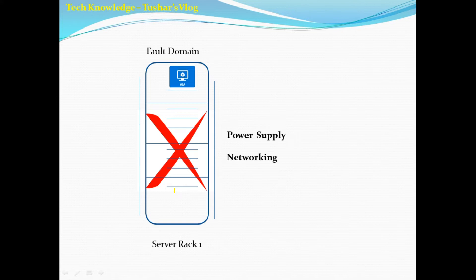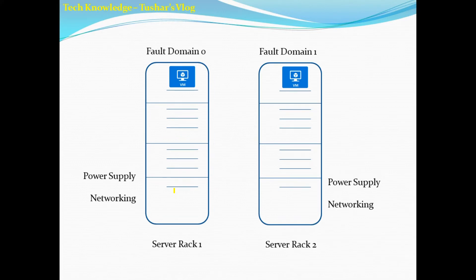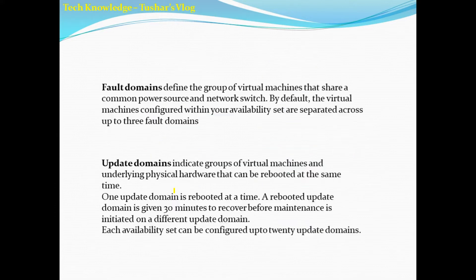How do I protect this and offer high availability to my virtual machine? One option is to set up another server rack. In the context of availability sets, we call these fault domains. I can have two server racks, each with its own power supply and networking, so if one server rack is down my virtual machine continues to work from the other rack. As per the Microsoft documentation, a fault domain defines a group of virtual machines that share a common power source and network switch. By default, virtual machines configured within your availability set are separated across up to three fault domains.